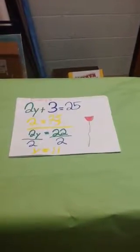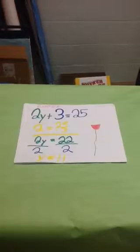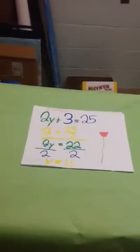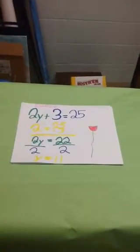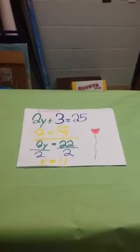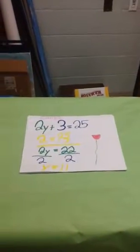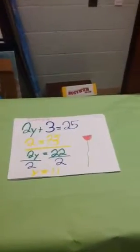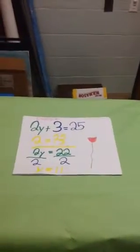Example of Two-Step Equations: 2y plus 3 equals 25. First, you subtract 3 from 25 and you will get 22. Then divide by 2 and your quotient is y equals 11.